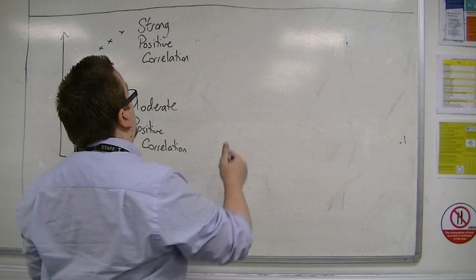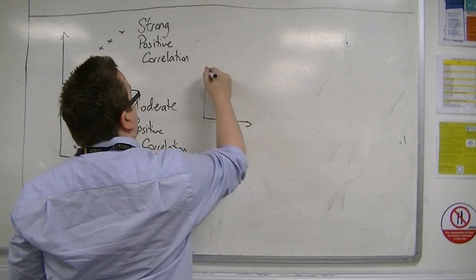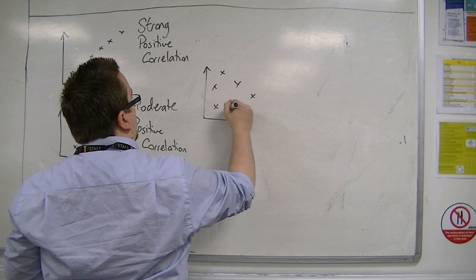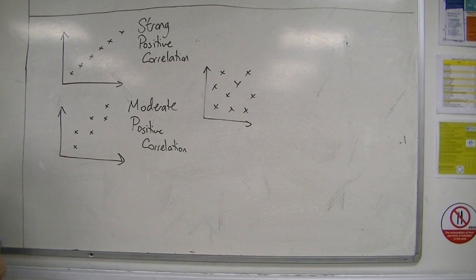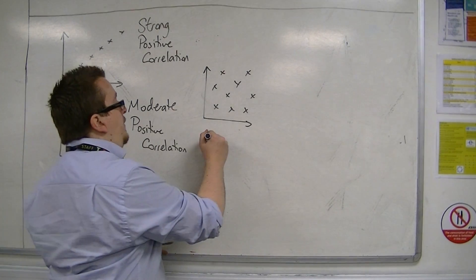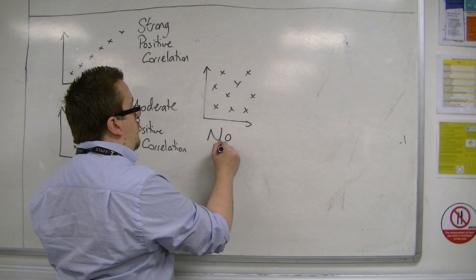If you get to the point, then, where the points are all over the shop, then it appears that there is no connection between the two. And so we would refer to this as no correlation.